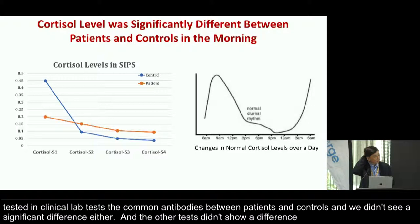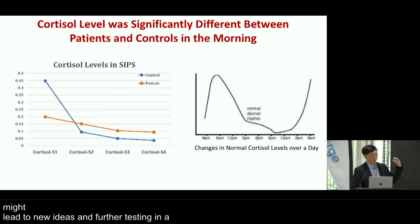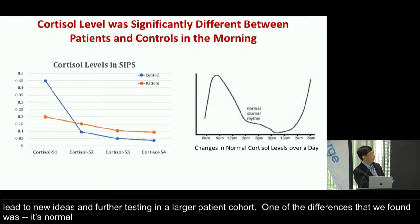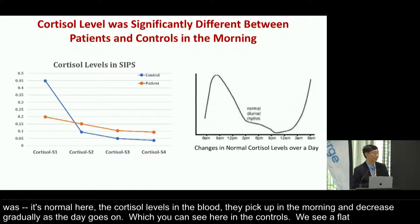However, we found a number of positive results in the next few slides, which might lead to new ideas and further testing in a larger patient cohort. One difference we found was the normal diurnal pattern in cortisol levels in the blood, which peaks in the morning and gradually decreases throughout the day — as seen in controls. In patients, we see a flattened pattern, which might be due to sleep problems, or may also contribute to the disease.